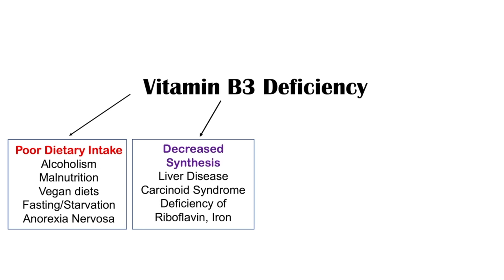Another cause of decreased synthesis is carcinoid syndrome, a paraneoplastic syndrome in which carcinoid cancer produces excessive amounts of serotonin from tryptophan, thereby consuming tryptophan so there isn't enough left to make vitamin B3. Additionally, deficiency of riboflavin and iron can reduce synthesis, since the hepatic conversion of tryptophan to niacin requires both riboflavin and iron.